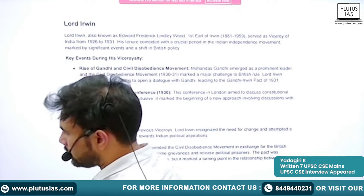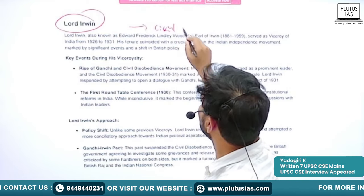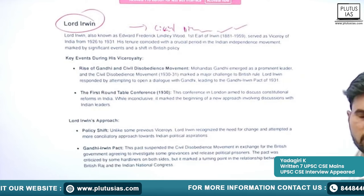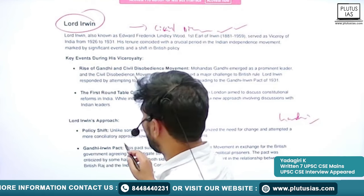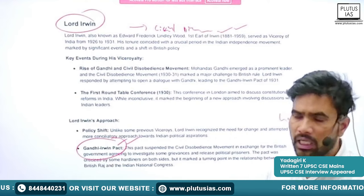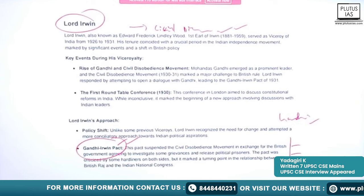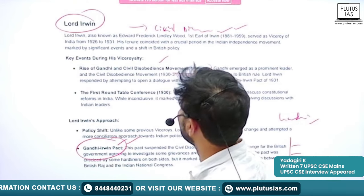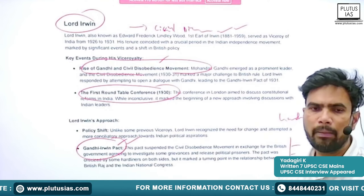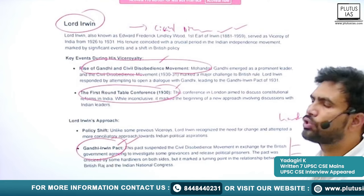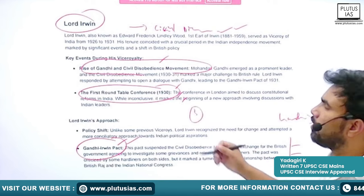The next Viceroy is Lord Irwin. He is very much associated with the Civil Disobedience Movement. He is known for his pact with Gandhiji — famously known as the Gandhi-Irwin Pact. The major development during his period is the Civil Disobedience Movement, after which Gandhiji temporarily halted it and chose to participate in the Round Table Conferences. During Lord Irwin's period, all three Round Table Conferences took place.